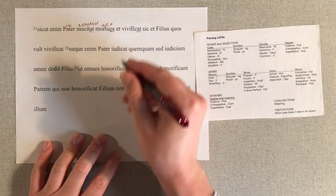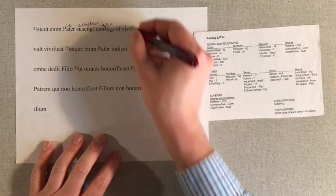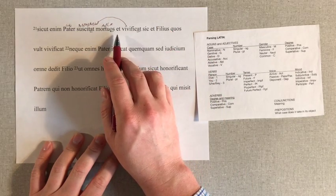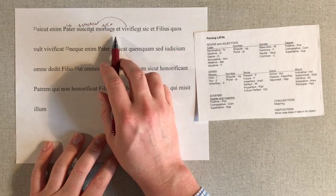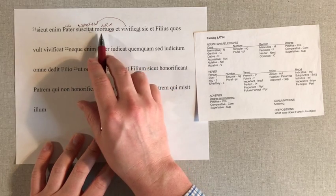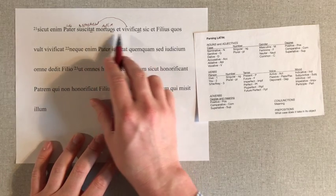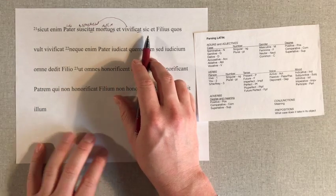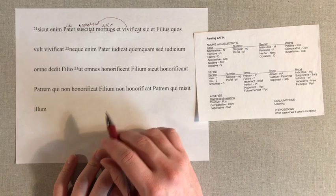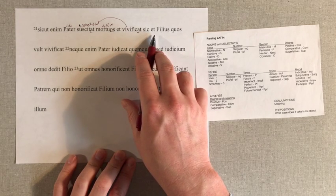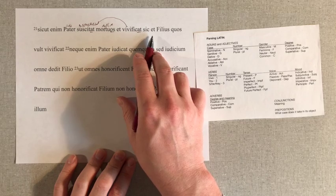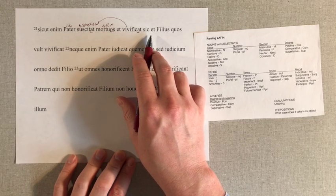And vivificat — we have another -at right there, also first conjugation, so it's in the same form as suscitat, which makes sense since et should typically only connect two things of the same form. Mortuos is taken as the object for both of them. Sic introduces another clause. Since we've got 'thus' there, et means simply 'and,' so 'also' is going to be the better option.